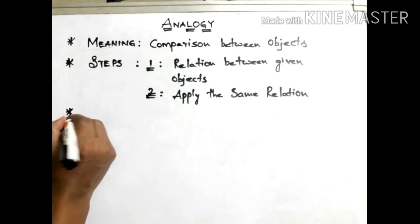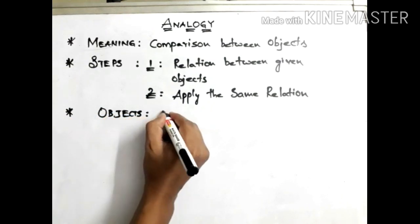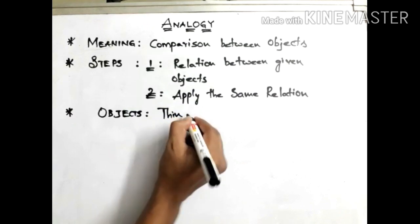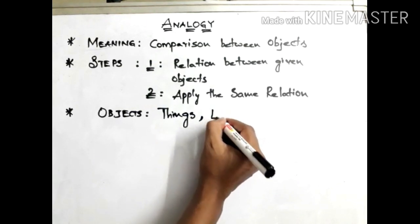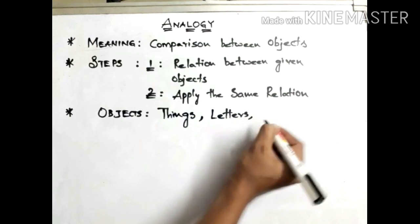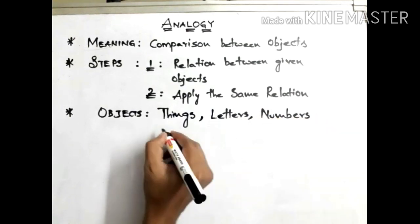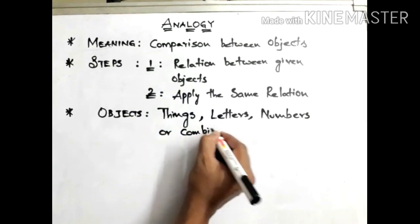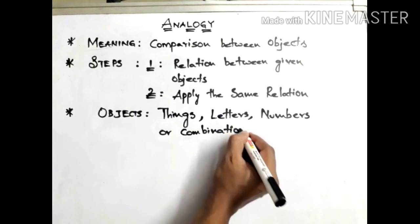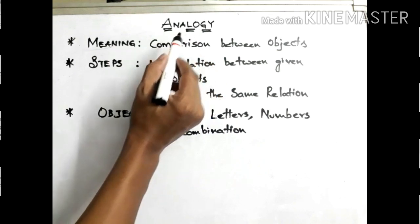Whenever we are saying 'objects,' it can be things like scissors, apples, vegetables — everything. Things, or letters, that means alphabets, or numbers, or a combination of all. So a combination of things, letters, and numbers can also be seen while we are solving the problems included in analogy.